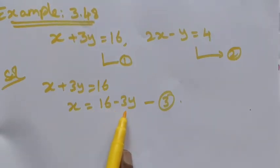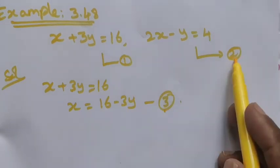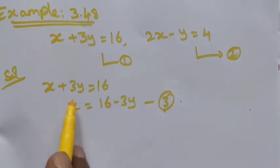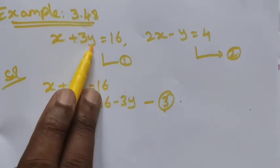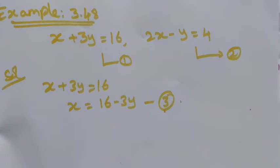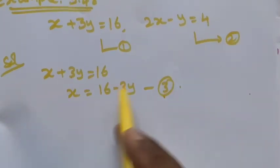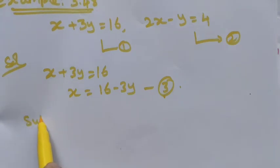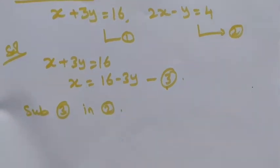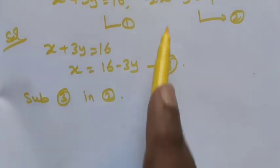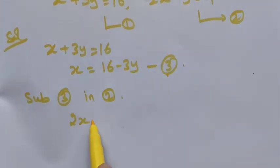Now we have found the x value as 16 minus 3y. Substitute this equation number three into the second equation. Don't substitute in the same equation — if we substitute in equation number one we get zero. So substitute equation number three into equation number two: 2x minus y is equal to 4.